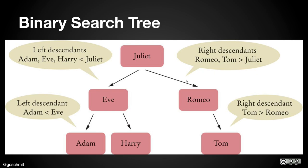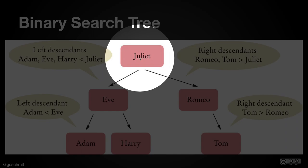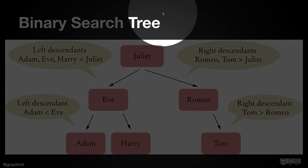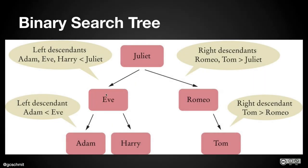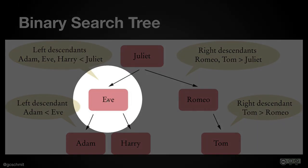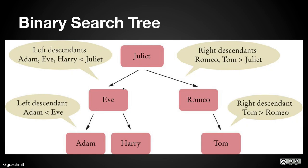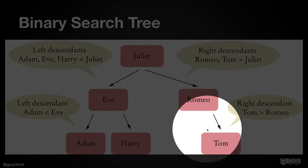Walking through this example: the root of the tree is Juliet. Every node in the left descendants is going to be less than Juliet — in terms of their implementation of the compareTo method of the Comparable interface, they come before Juliet. Eve, Adam, and Harry all come before Juliet, so all three are in the left subtree. In the right subtree, all nodes will be greater than Juliet, which is why Romeo and Tom are there.